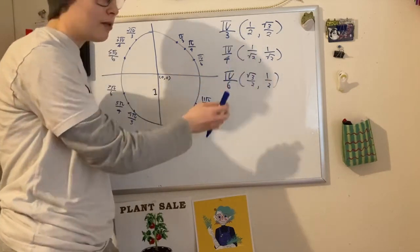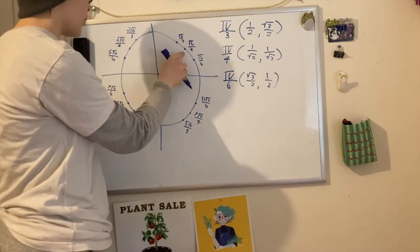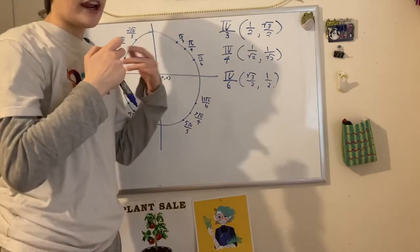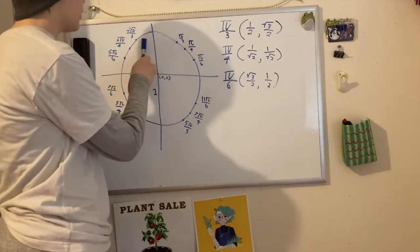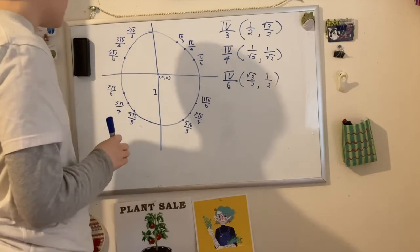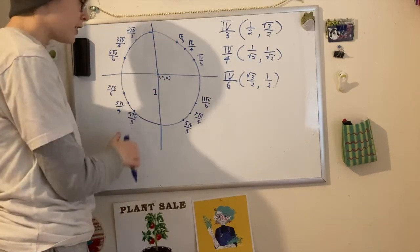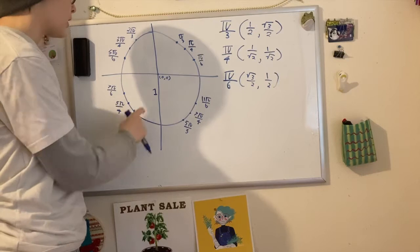The only thing that changes between this point and this point, or this point and this point, is the negativity and positivity of the cosine and sine. As this one is going over the y-axis, the cosine becomes negative. As it goes over the y-axis, the sine becomes negative, and the cosine is negative.